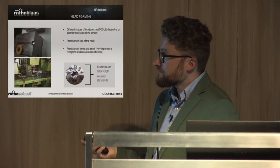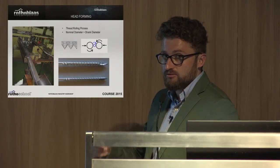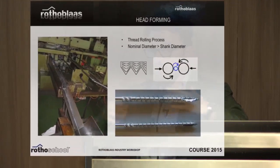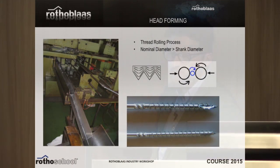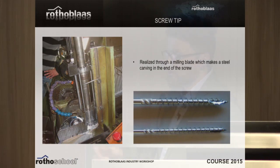The thread is created in a second phase of production where the wire comes into a machine that creates the thread. At the same time there is a milling point, which is important because during insertion all the chips of the grain come up, and at this phase of the screw the chips can be removed. The tip also has a carving milling feature that helps the screw work together while being inserted.